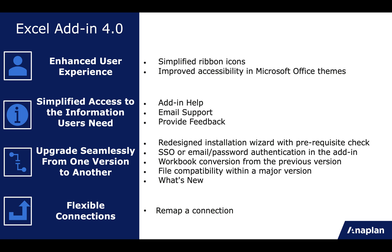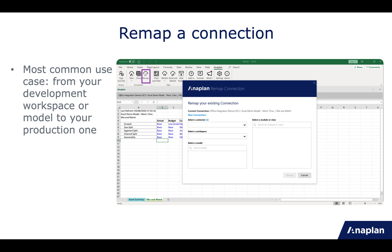The last new feature is more flexible connections — specifically, the ability to remap a connection. The most common use case is if you've created a connection to your development model and want to remap it to your production model. It can be different models in different workspaces. Just open the spreadsheet with your connection, click on Remap, and you'll see the current connection — then simply remap it to your new connection. Remember to press Refresh afterwards to update your data.